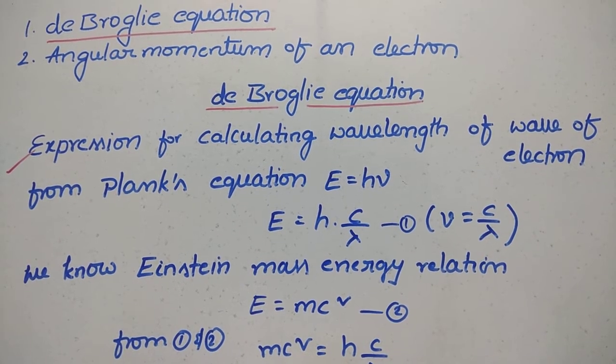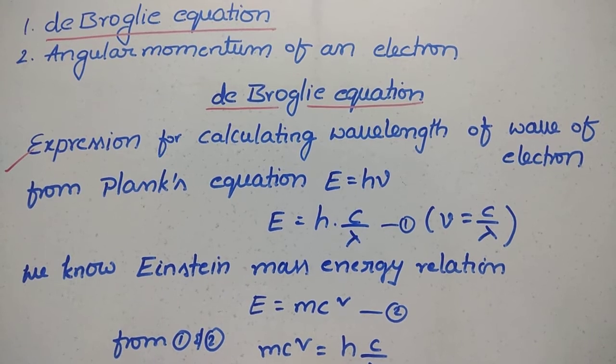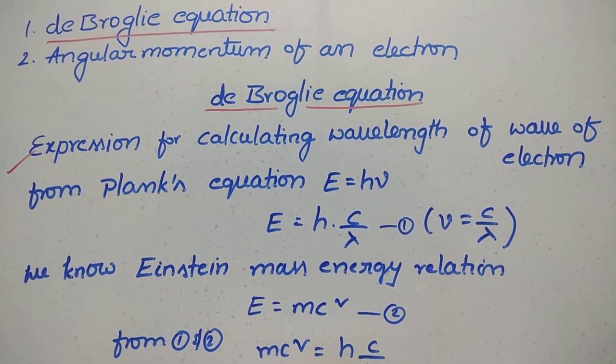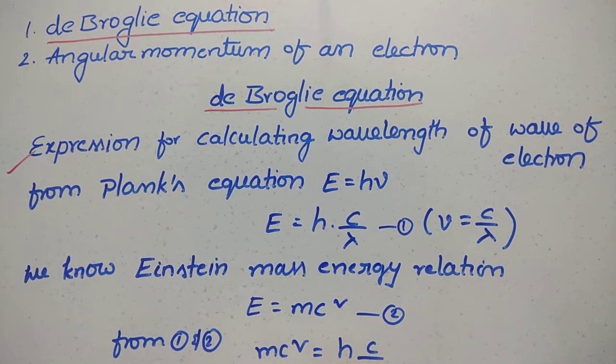Hi students, today's topic is the De Broglie equation, angular momentum of an electron, and the Heisenberg uncertainty principle. Let's go into the topic. De Broglie equation.